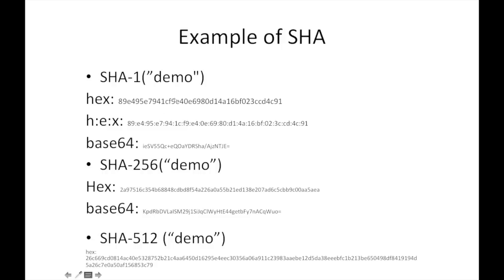For example, if you calculate SHA-1 for the clear text 'demo', this is the hex value — a 160-bit output. For SHA-256 for 'demo', this is the hex value. And for SHA-512, this is the hex value — a longer string. A base64 output is also shown for comparison.